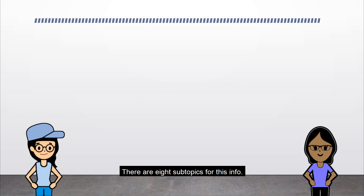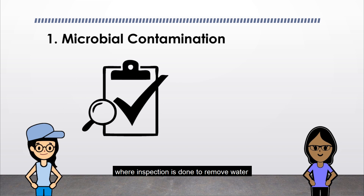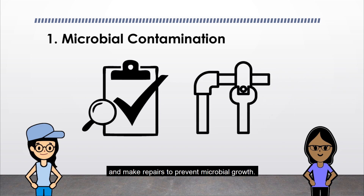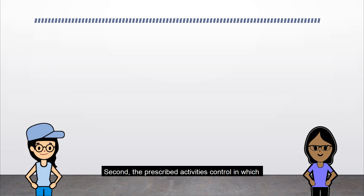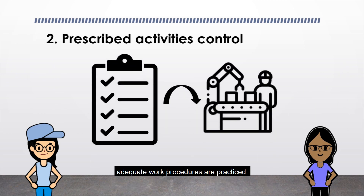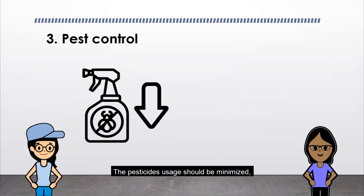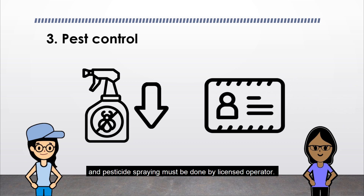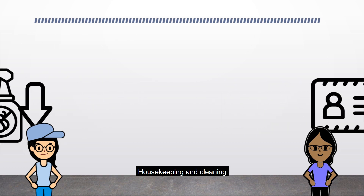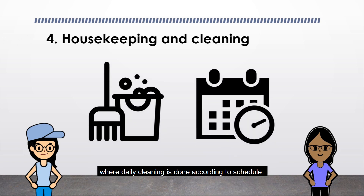There are 8 subtopics for this info. First, microbio contamination, where inspection is done to remove water and make repairs to prevent microbiome growth. Second, the prescribed activities control, in which adequate work procedures are practiced. Third, pest control — pesticide usage should be minimised and pesticide spraying must be done by a licensed operator. Fourth, housekeeping and cleaning, where daily cleaning is done according to schedule.